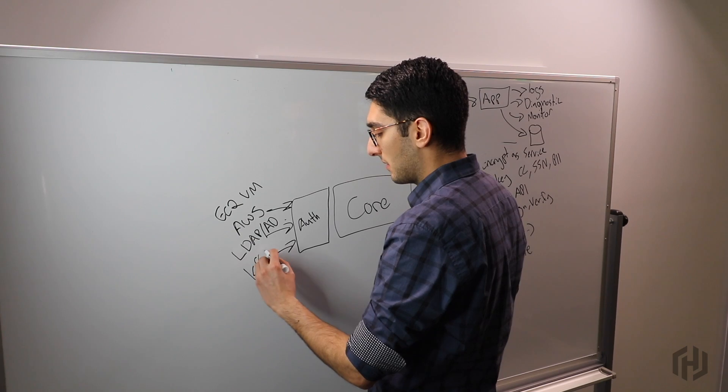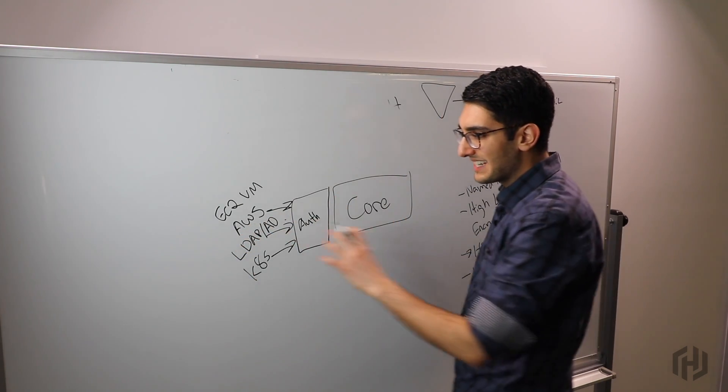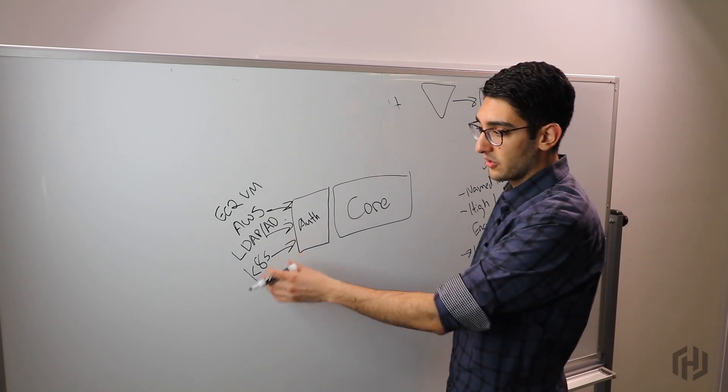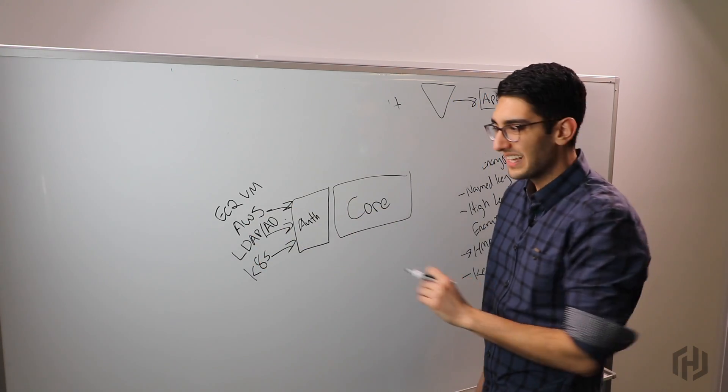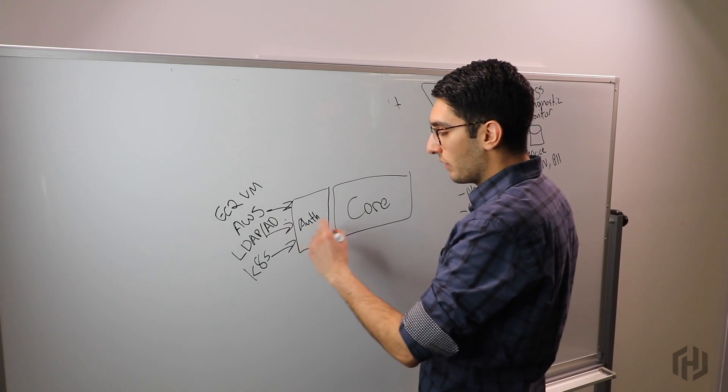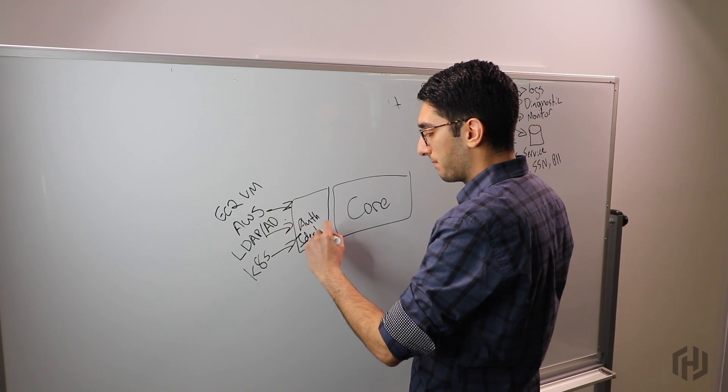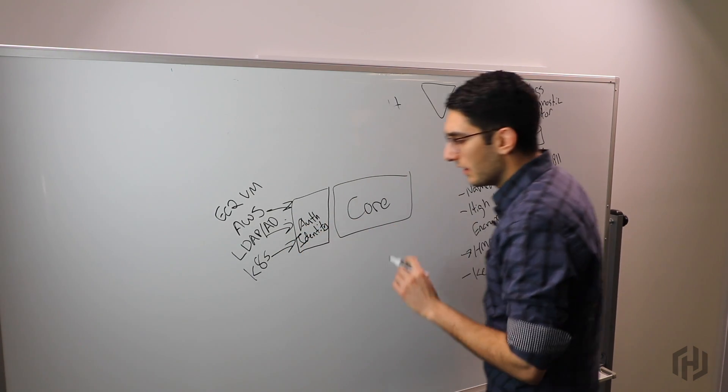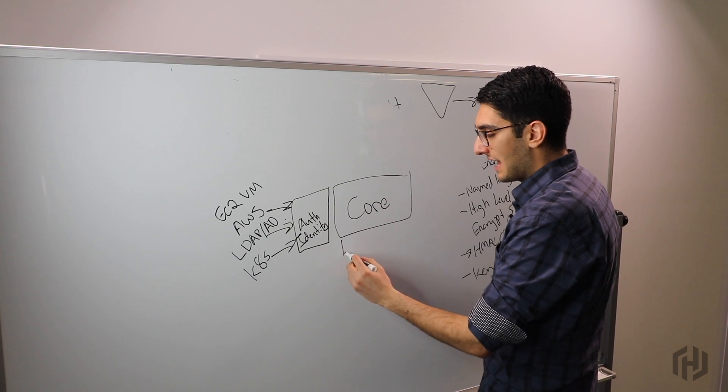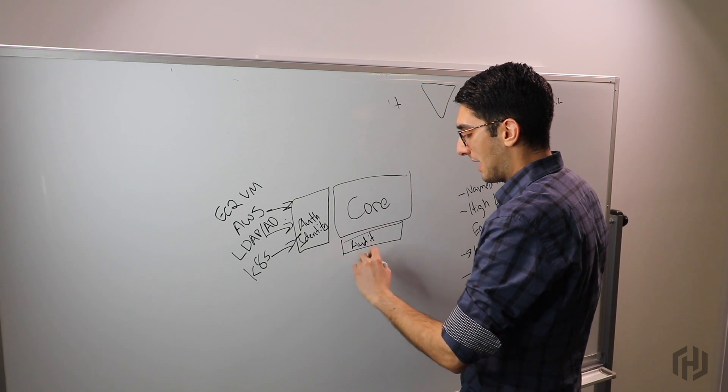If we have a human user, they might be coming in and using something like LDAP or Active Directory to prove their identity. If we're using a high-level platform, maybe something like Kubernetes, we might be using our Kubernetes authentication provider. The goal of these authentication providers is to take some system we trust, whether it's Kubernetes, LDAP, or AWS, and use this to provide application or human identity at the end of the day.